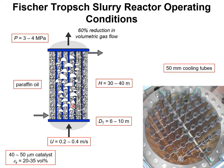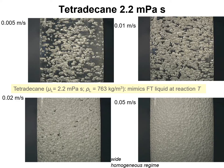We ask how the hydrodynamics is influenced by superficial gas velocity, by the properties of the liquid, and by the catalyst concentrations. To address all these questions, my group at the University of Amsterdam conducted a comprehensive investigation of bubble column slurry reactor hydrodynamics. The findings are published in the literature as evidenced by my Google Scholar profile, and I show video animations to illustrate key points.